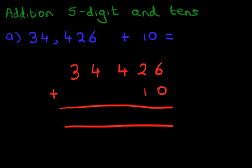And we're going to label the columns as well. We've got units, tens, hundreds, thousands, ten thousands. So as we always do, we start by adding the column on the right-hand side first. So what is 6 plus 0? Well, 6 plus 0 is 6. Now the tens column.